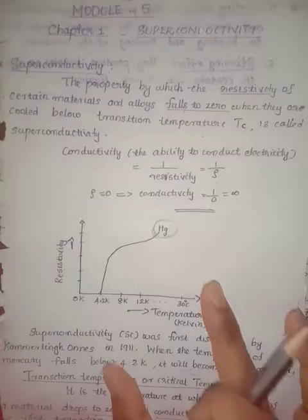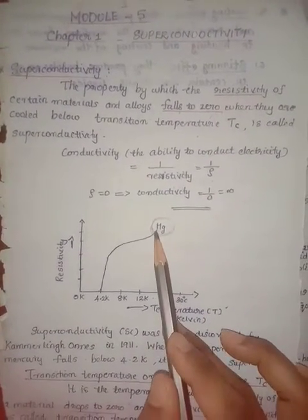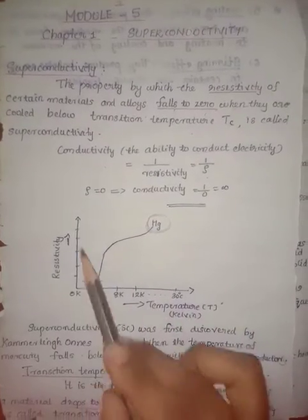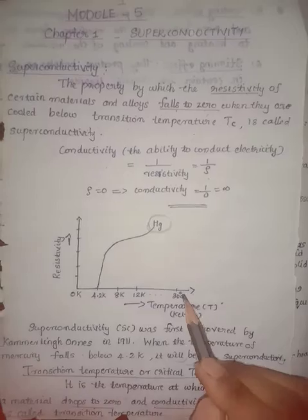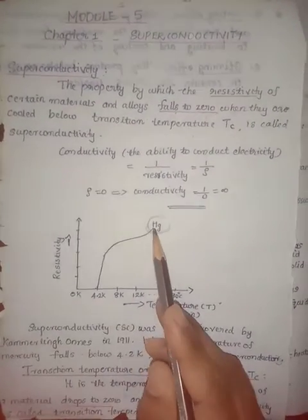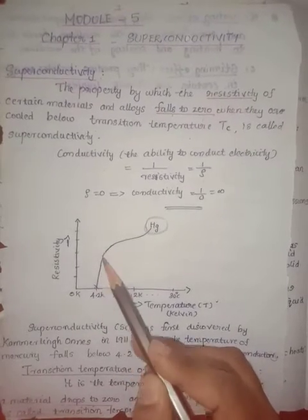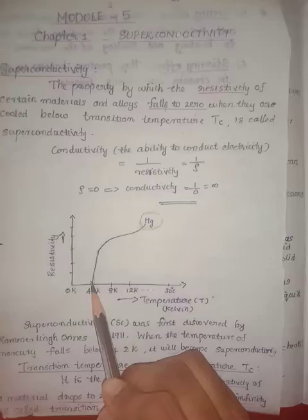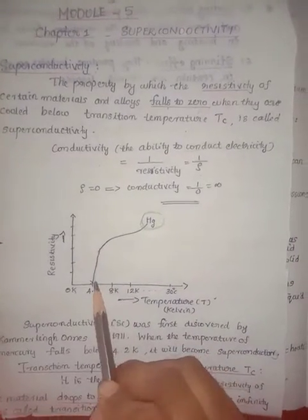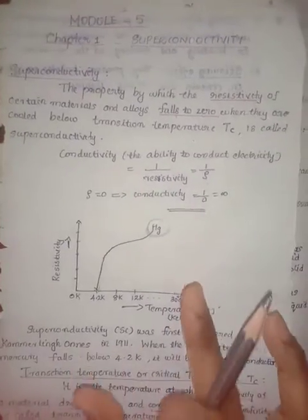This was first introduced by Kamerlingh Onnes. He experimented with Mercury by reducing its temperature. When the temperature was reduced and reached 4.2 Kelvin, the resistivity suddenly dropped to zero. This is the first proof of superconductivity.